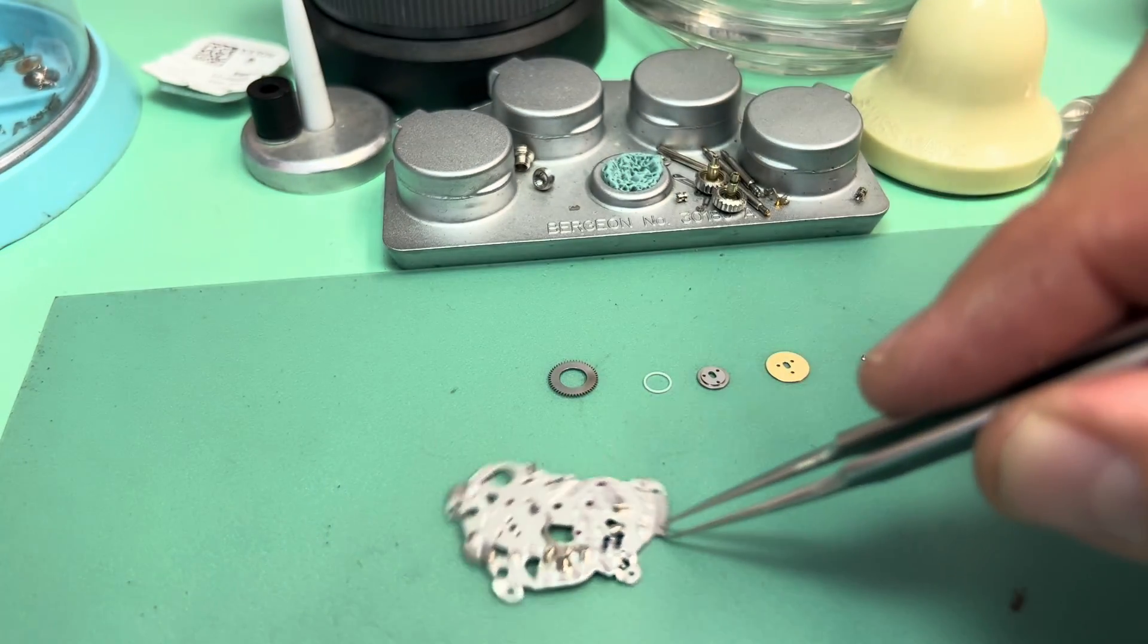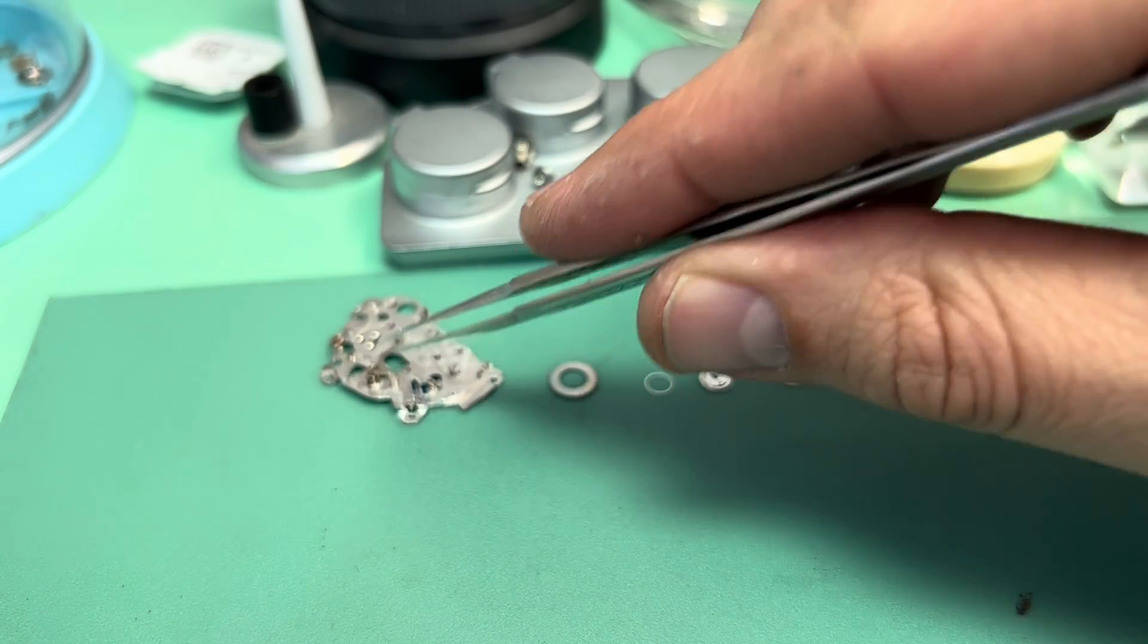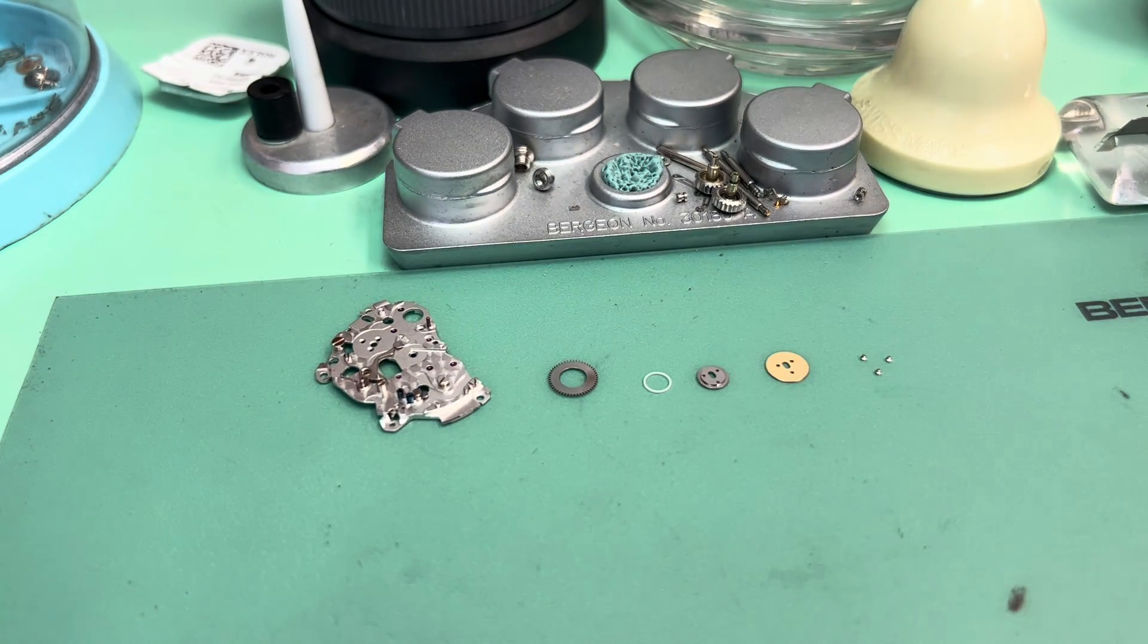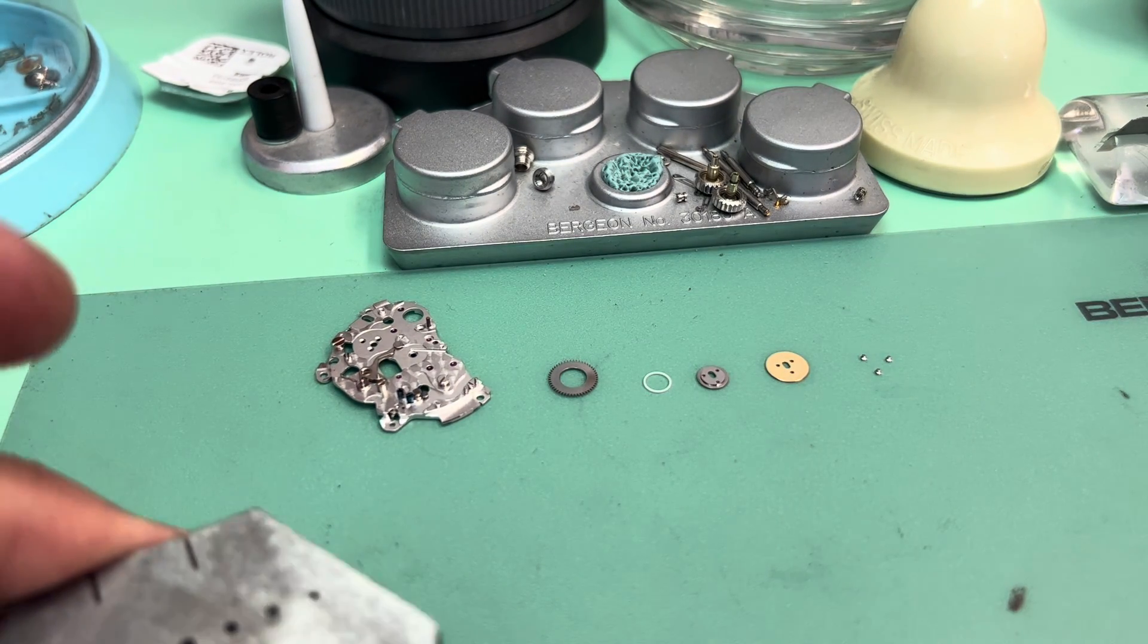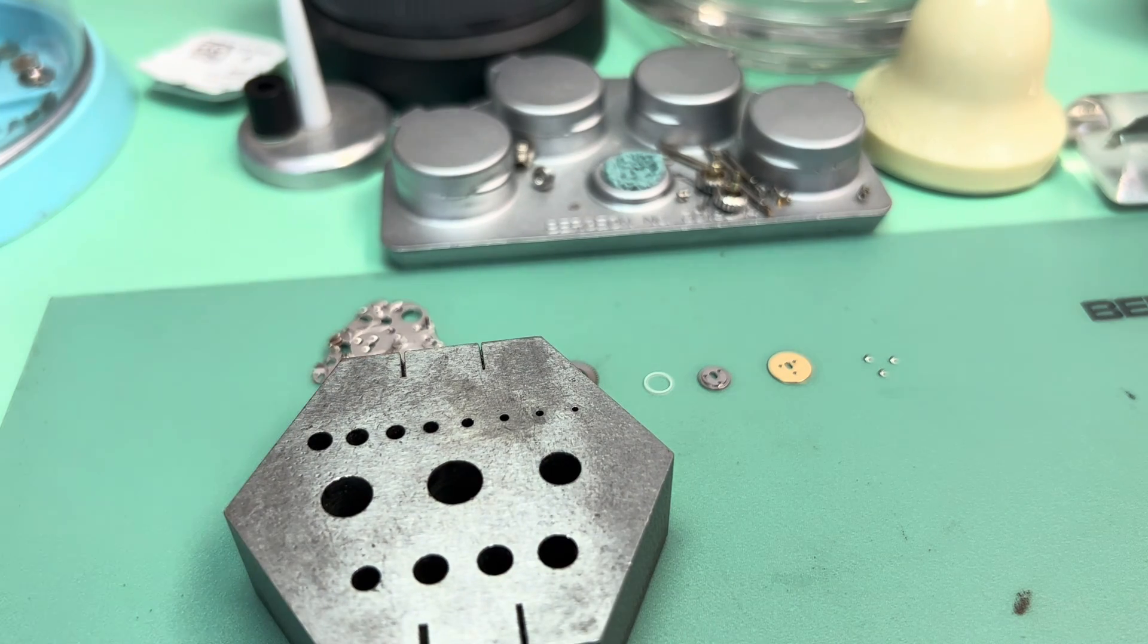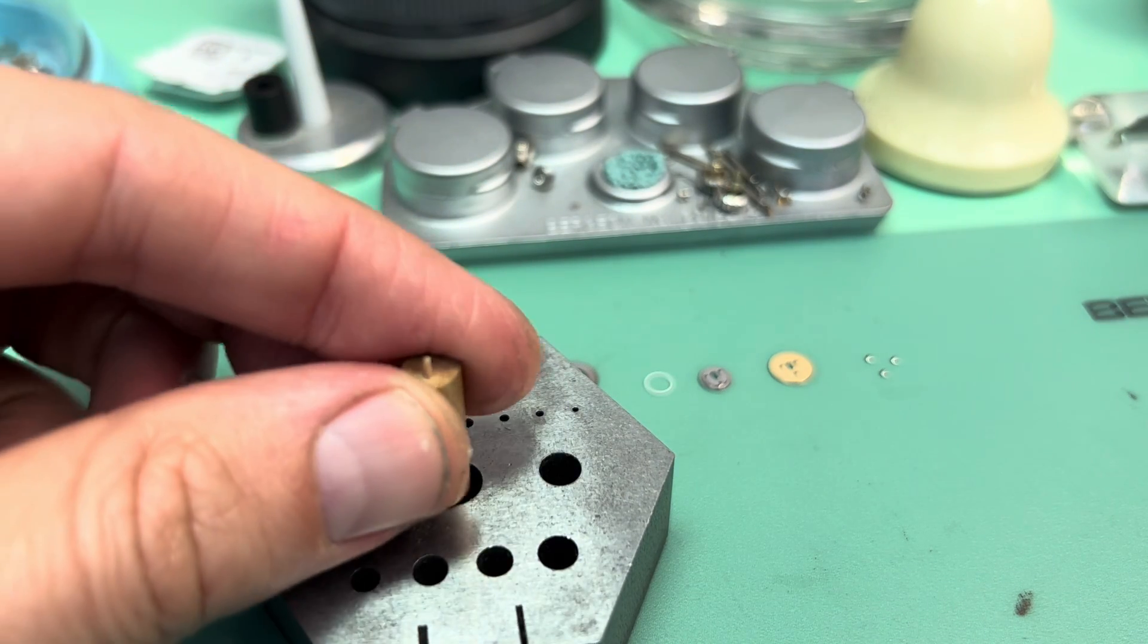Three screws go right there. So the question is, how do we secure the pieces from the bottom while screwing them in from the top? Well, I'm going to show you.